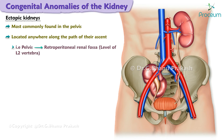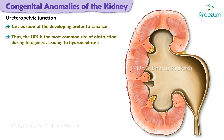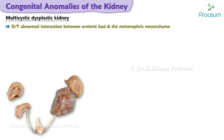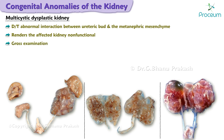Ectopic kidneys can be located anywhere along the path of their ascent, from where they first form in the pelvis to where the kidneys normally lie within the abdomen in the retroperitoneal renal fossa at the level of the second lumbar vertebra. The ureteropelvic junction is the last portion of the developing ureter to canalize, thus it is the most common site of obstruction during fetogenesis, leading to hydronephrosis.